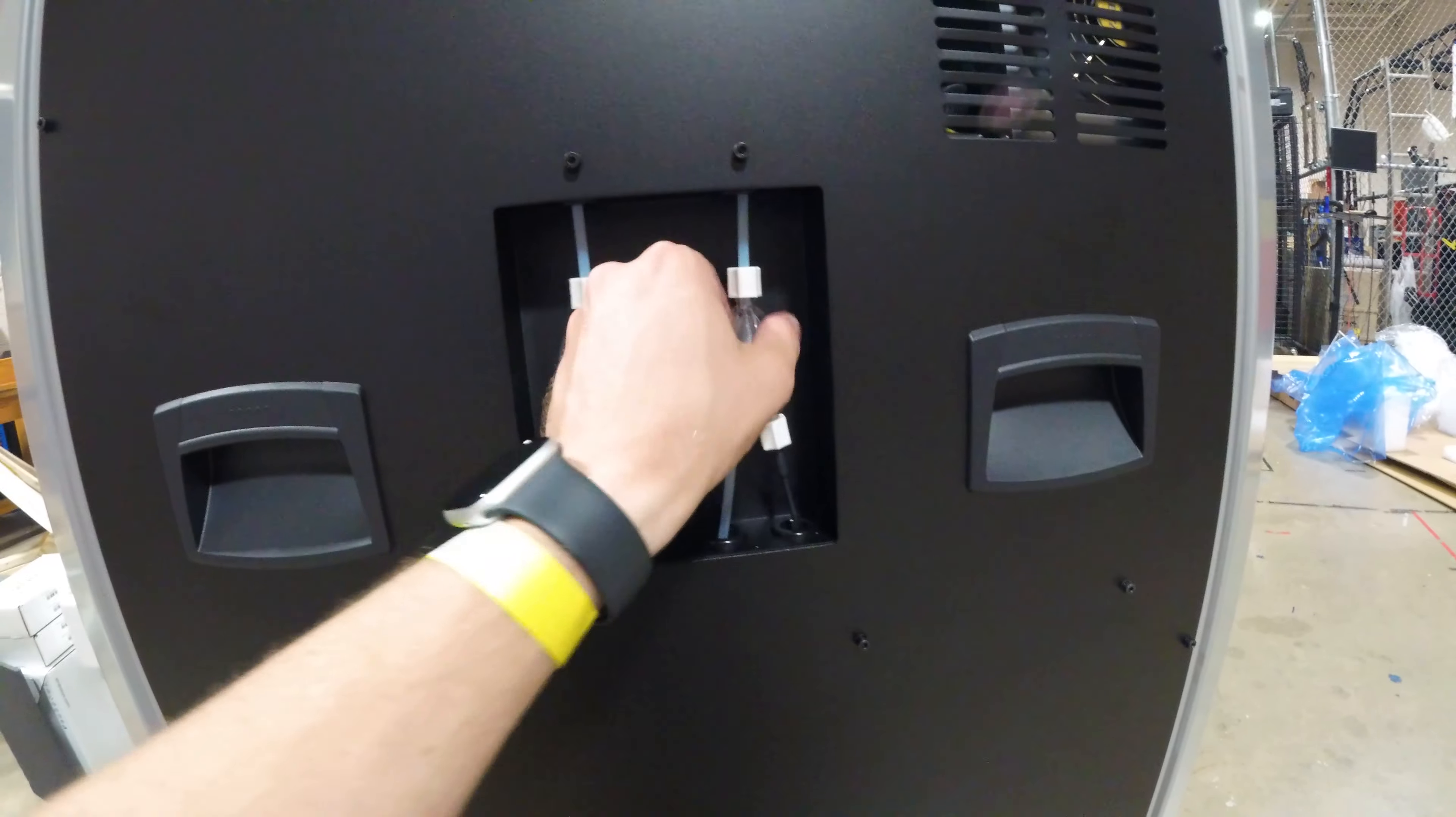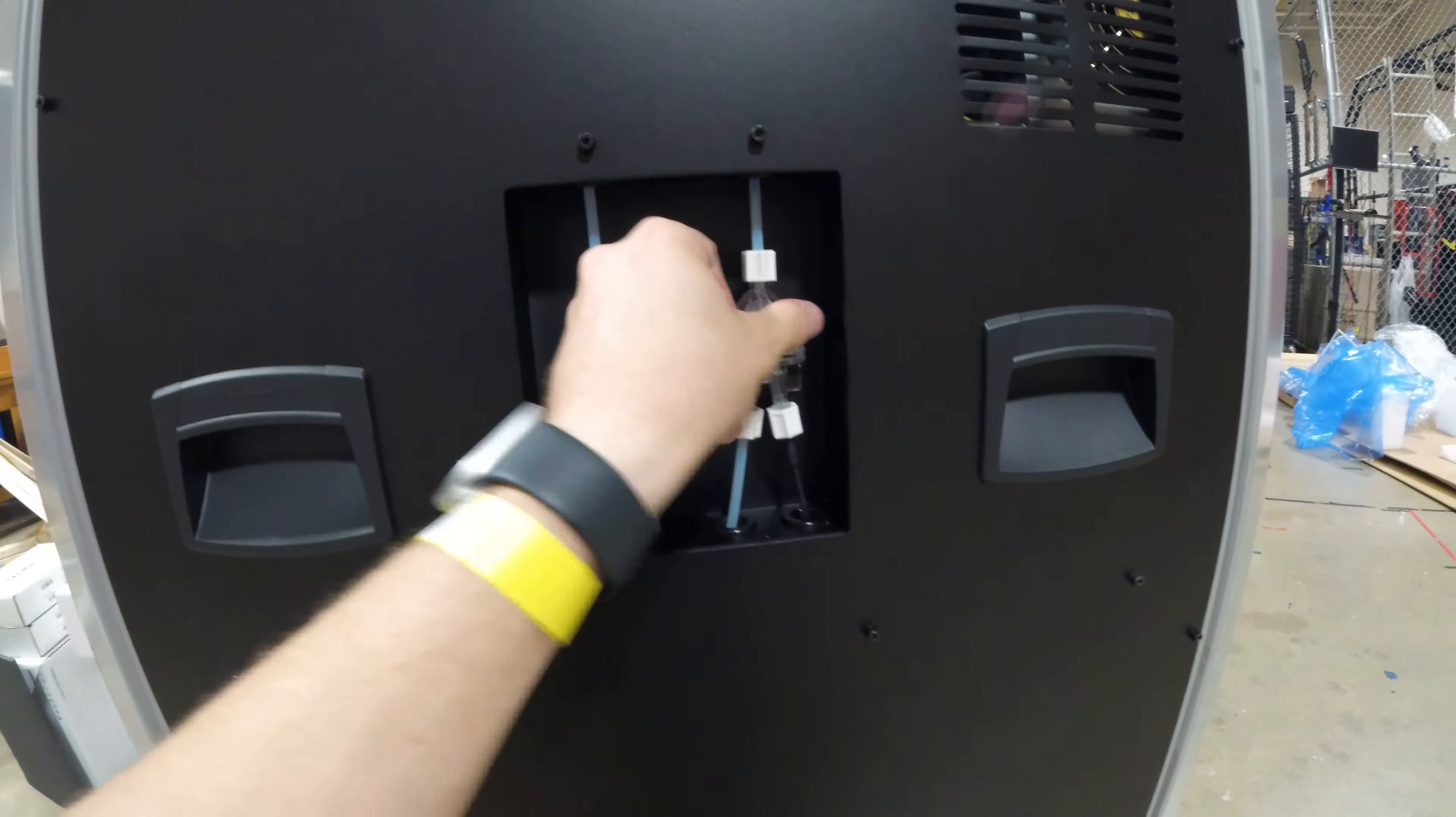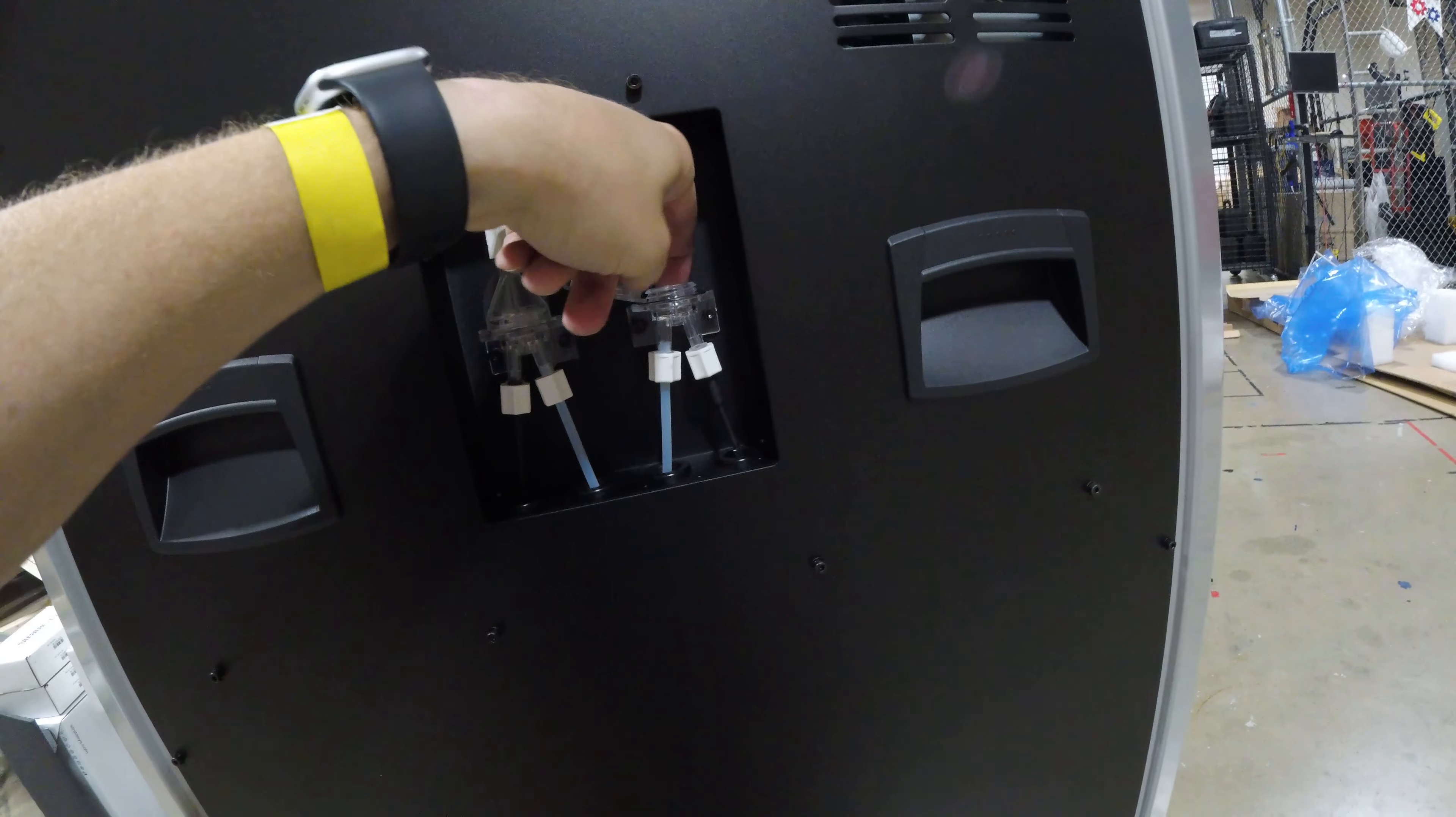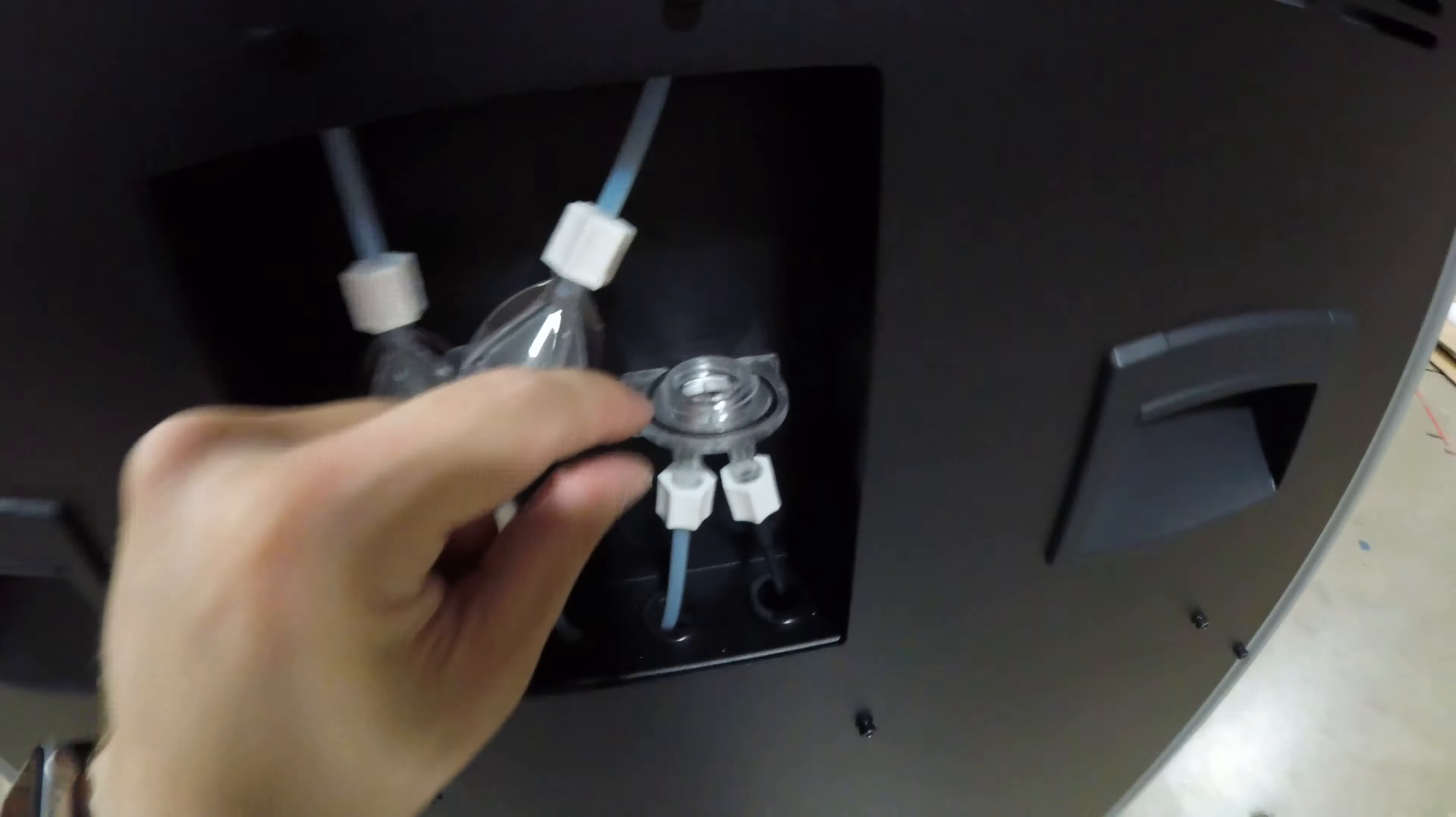Once you get it cracked loose the first time, it's easy from there on out and we just untwist it. And you can see here's the little gasket. This is an important piece as well, so you don't want to lose this. That should sit nicely in there. This piece will unscrew as well.